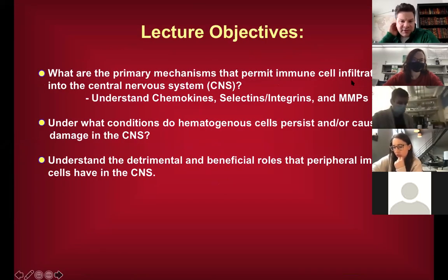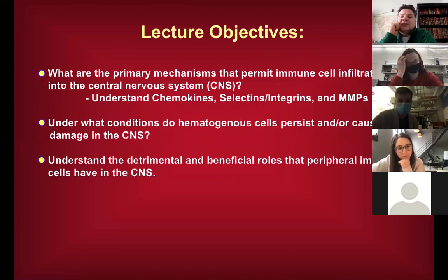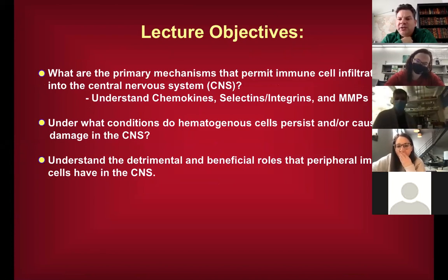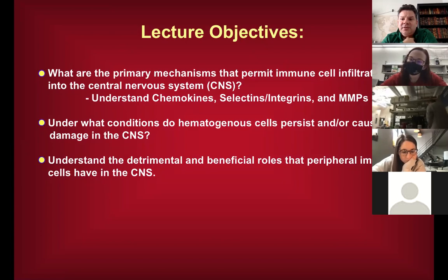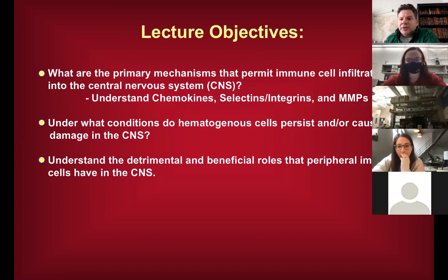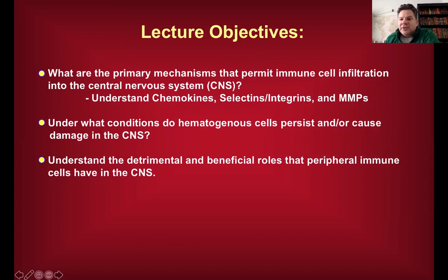I want to talk about chemoattraction. It involves something called a chemokine, selectins, integrins, and matrix metalloproteases. We mostly see recruitment into the brain and spinal cord with injury, autoimmune disease, and CNS infection. This recruitment is not what's happening in the healthy brain — the immune system is recruited for a purpose, but bringing it in can cause collateral damage to oligodendrocytes and neurons.